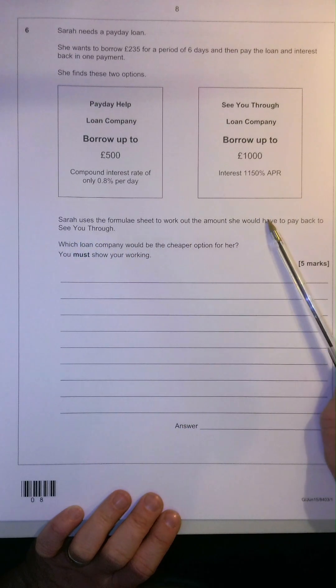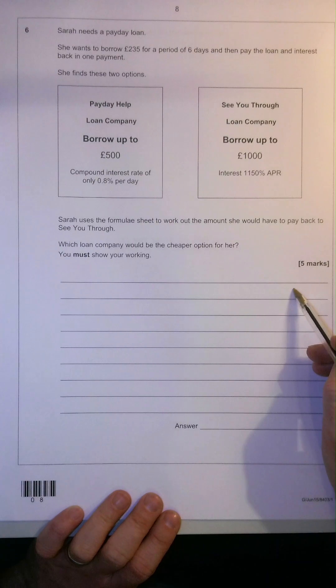So which one would be cheaper for her, essentially? We must show her working for this, we can be rewarded with 5 marks.